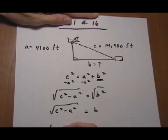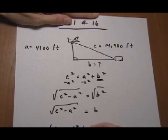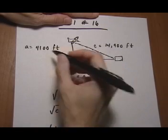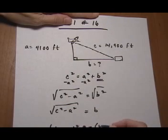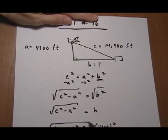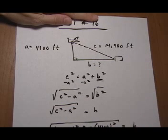C squared is going to be 14,900 squared, take away A squared — A is 4,100 — square it, take the square root, and I'll have my B.